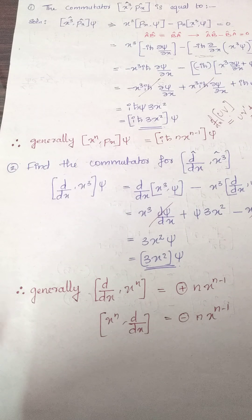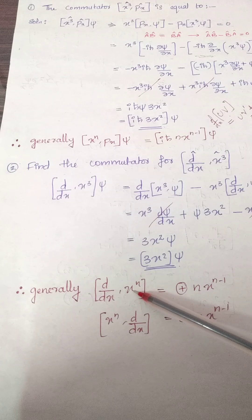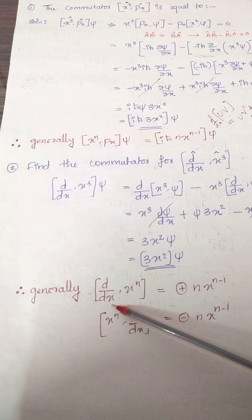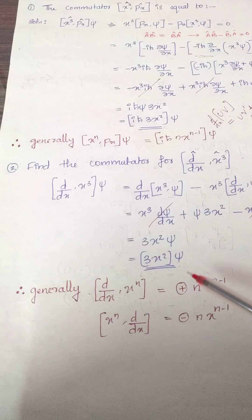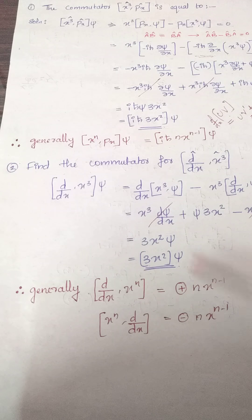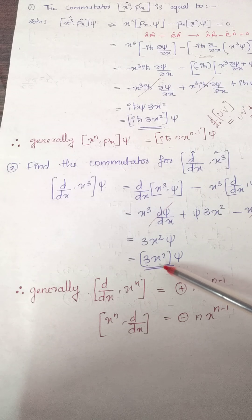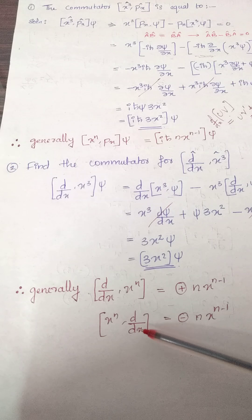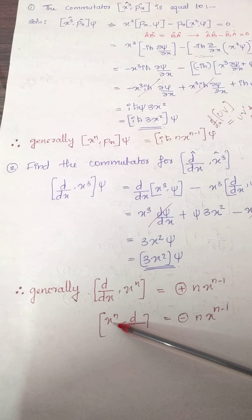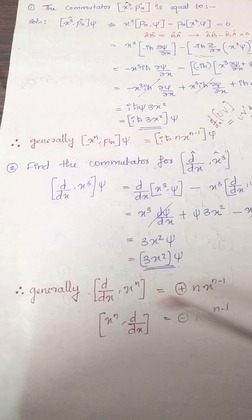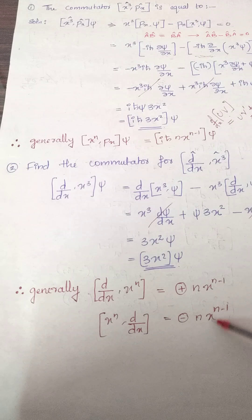And here also I have given the general formula: if d/dx and x raised to n — in these cases, if d/dx is coming in the front side, your answer will be having a plus sign, like the same way we have done. Here d/dx is coming and the answer is having a plus sign. And in the second one, x raised to n is coming in the front side, so you will be having a minus in the answer, and rest everything will be equal — just a plus and minus game it is.